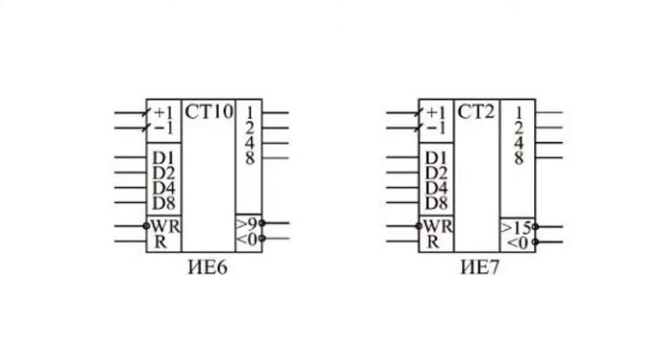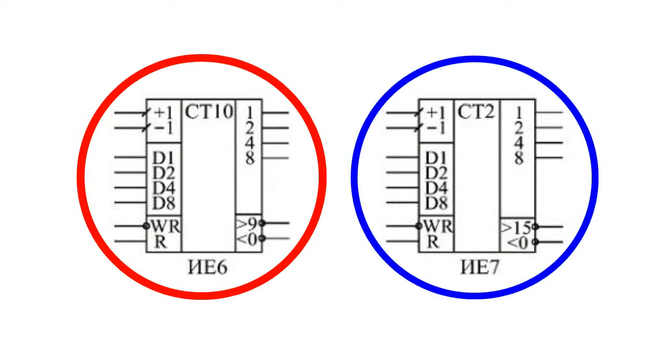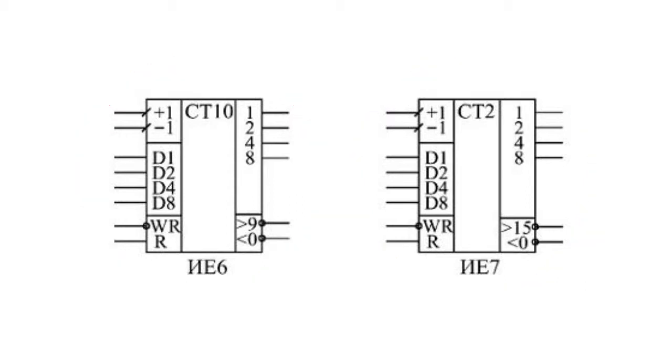Binary decimal counter IE6 and binary counter IE7 can serve as examples of synchronous counters with asynchronous carry. Both counters are bidirectional and can do direct and reverse counting.